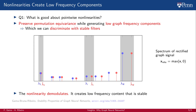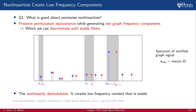This is exactly where nonlinearities come into play. The good thing about pointwise nonlinearities is that they preserve permutation equivariance while generating low graph frequency components, which we can actually discriminate with stable integral Lipschitz filters. Essentially, the nonlinearity demodulates the signal, creating low frequency content that can be discriminated in a stable manner. For example, when we apply a ReLU to the signal located at λ_n, new content appears at low eigenvalues and does not change much — see the change in the spectrum from blue to red for low eigenvalues. We also see that this low eigenvalue content is different from the one generated by the signal located at λ_{n-1}. This means we can leverage this new low eigenvalue content, created by the nonlinearity, to discriminate between both signals using only stable integral Lipschitz filters.